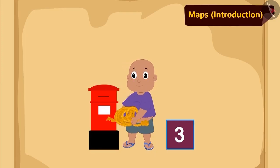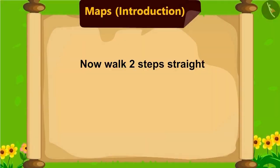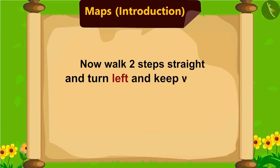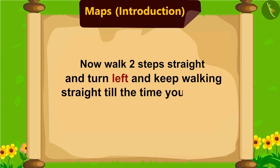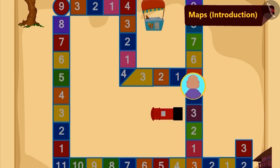He read the further instruction: now walk two steps straight and turn left, and keep on going straight until the time you reach a triangle shaped tile. According to the instructions, Bablu reached the triangle tile.